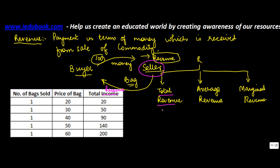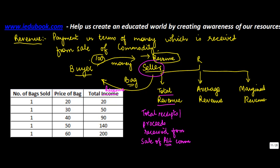Total revenue basically means the total proceeds received from the sale of all commodities. Let's say they sold a total of 5 bags and what he earned out of this was a total of 200 rupees, so 200 is the total revenue, which is also expressed as TR.